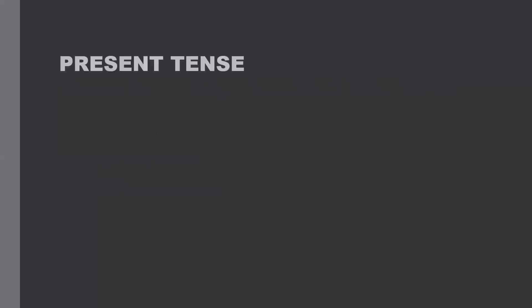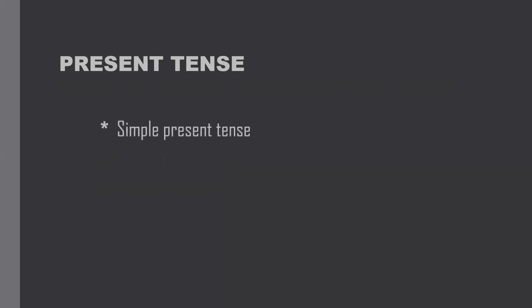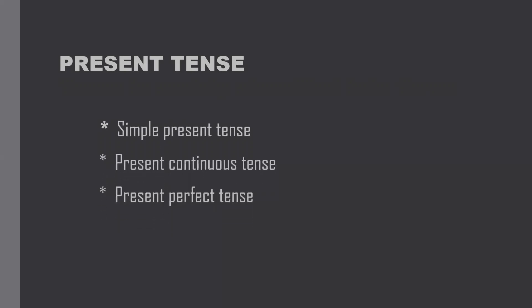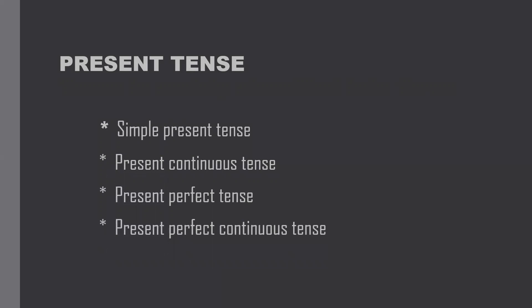In regional languages like Malayalam, Tamil, and others, there is only one present tense, one past tense, and one future tense. But in English, the present tense is again classified into four: simple present tense, present continuous tense, present perfect tense, and present perfect continuous tense.